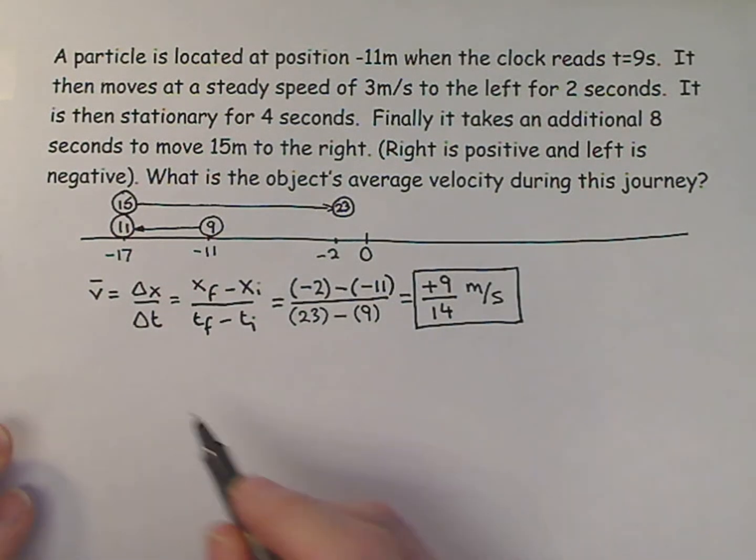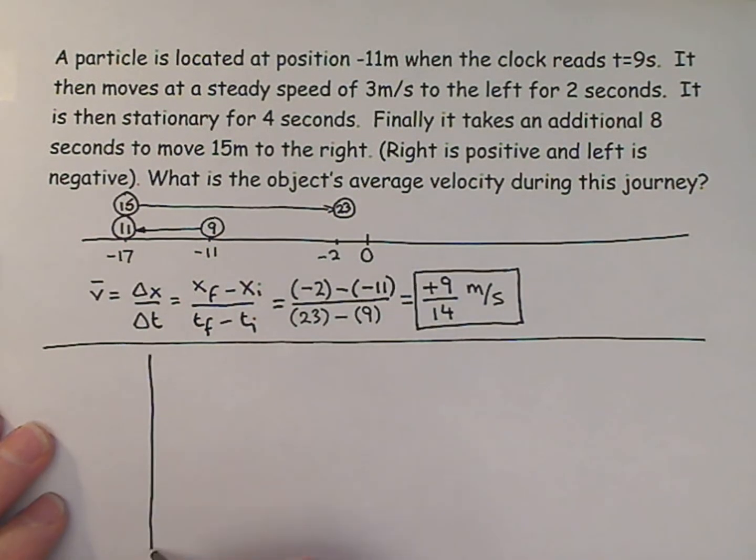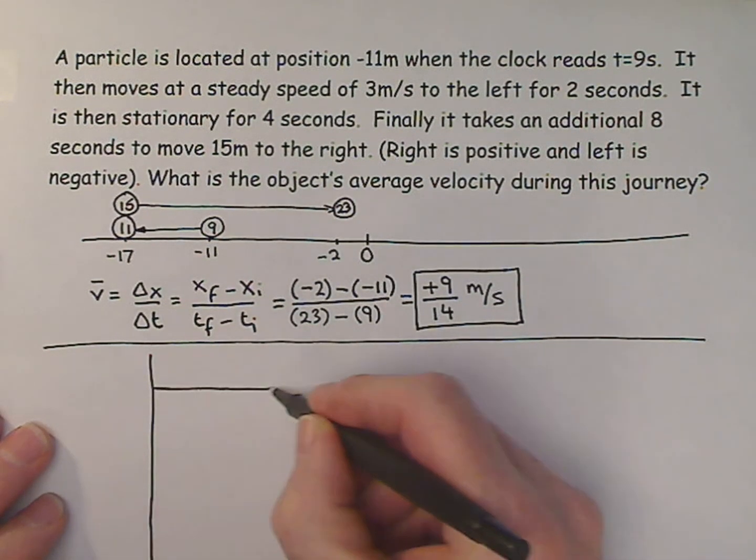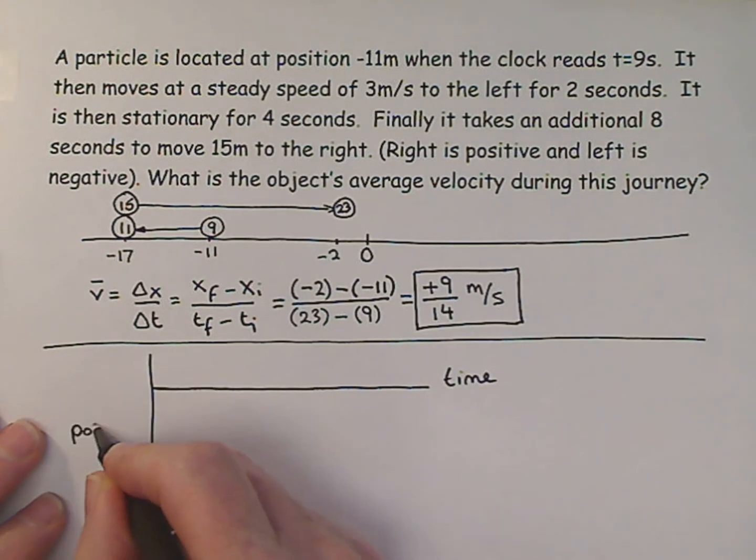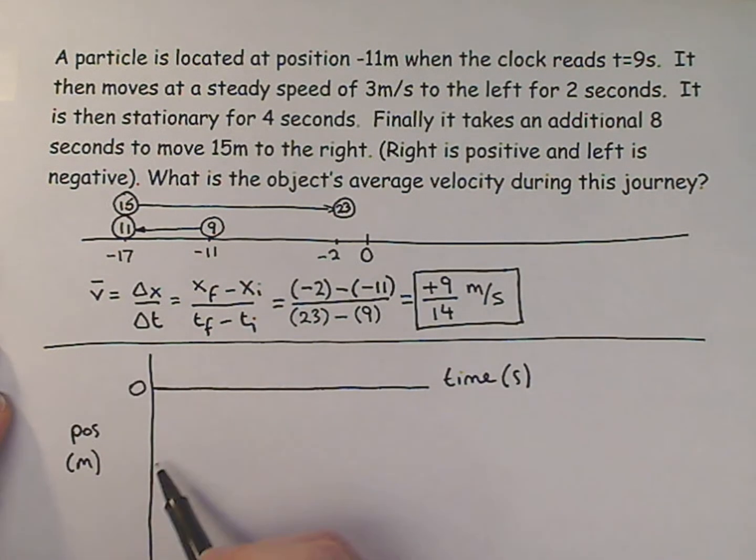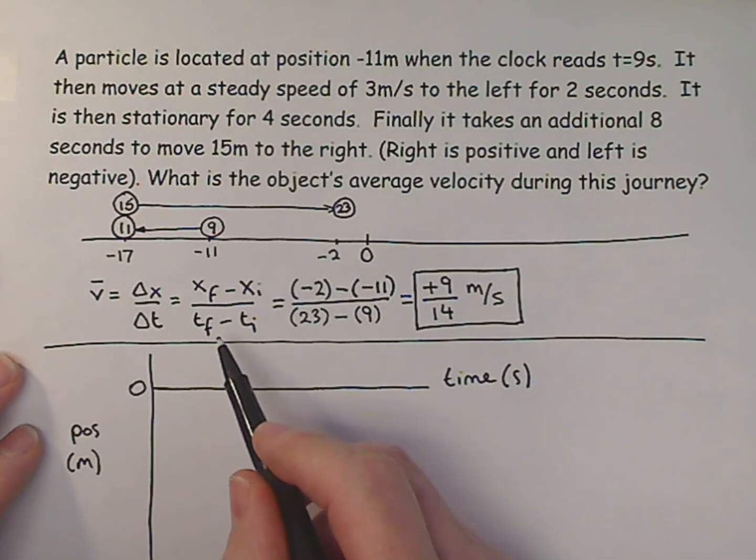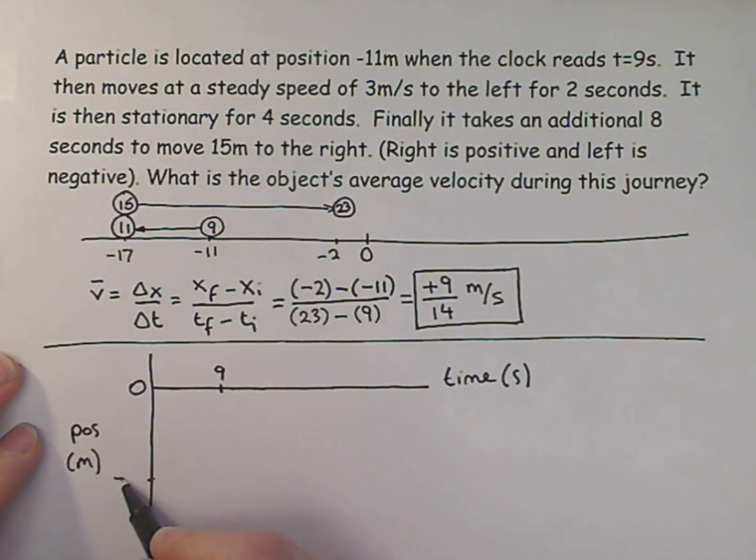There is another way. And if I draw out a position versus time graph. So this is time. And this is position. Let's call this in meters and this in seconds. I know that all my numbers are negative, so I drew my graph with my axis just there. And if I look at this, then I know that I start off at nine. So let's make this nine. And I'm at minus 11. So let's go here to minus 11.